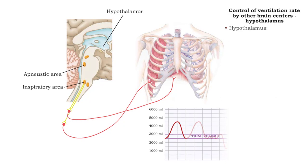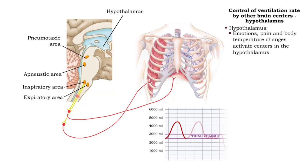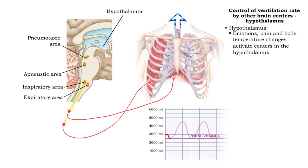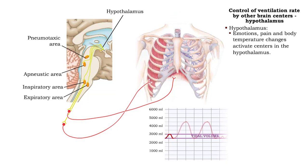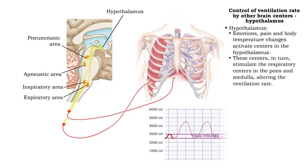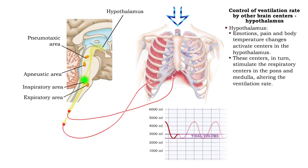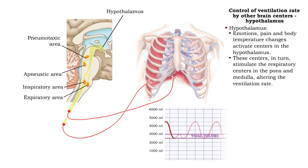The hypothalamus is another region of the brain that influences ventilation rhythm. Emotions, pain, and changes in body temperature activate centers in the hypothalamus. These centers, in turn, stimulate the respiratory centers in the pons and medulla, altering the ventilation rate.